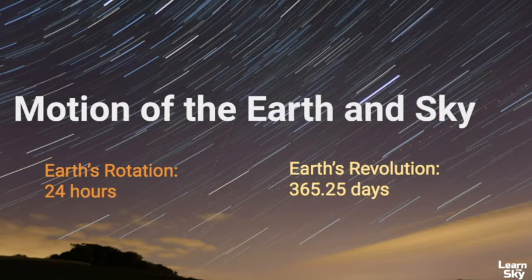Furthermore, we know that the earth's rotation is 24 hours, but the earth's revolution to make one complete trip around the Sun takes 365.25 days. Those extra 0.25 days over the course of four years gives us a leap year and that's why we have February 29th every four years.